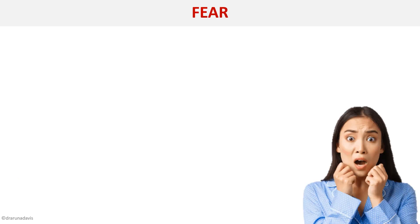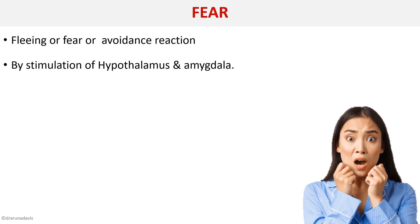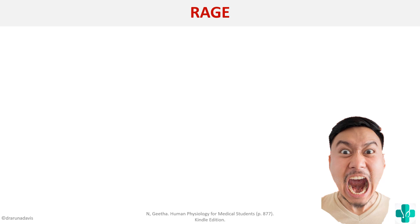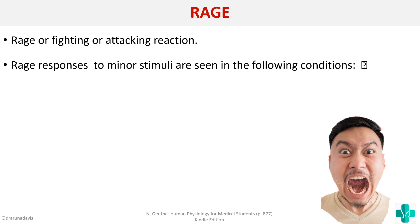Fear is a fleeing or avoidance reaction that occurs experimentally due to stimulation of the hypothalamus and amygdala. The amygdala encodes memories that evoke fear — that is why even seeing a rope triggers a memory that snakes can be poisonous. Rage means feeling very angry; it is a protective emotion that puts the animal in an attacking or fighting mode. Rage usually responds to major stimuli but can occur with minor stimuli after removal of the neocortex, stimulation of the lateral hypothalamus, or stimulation of the amygdala nuclei.